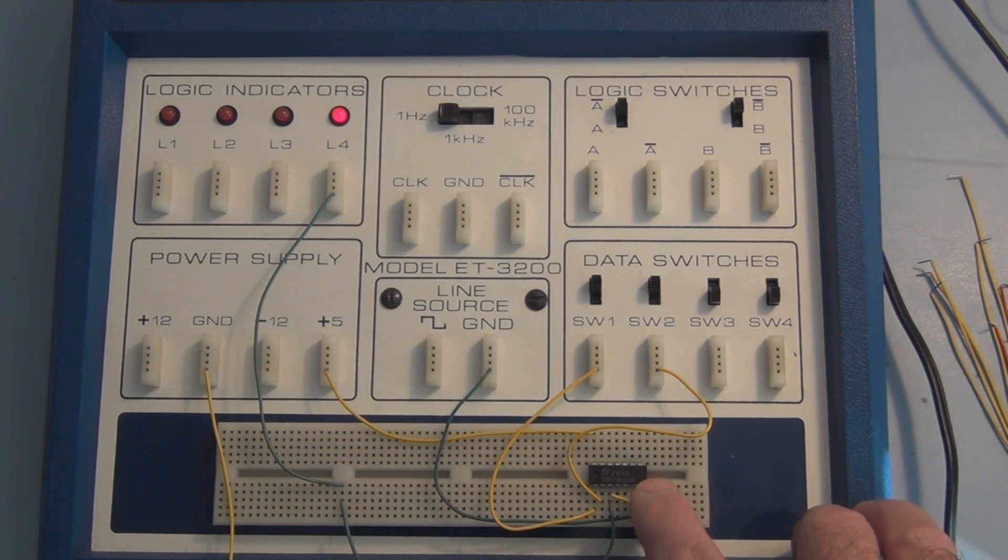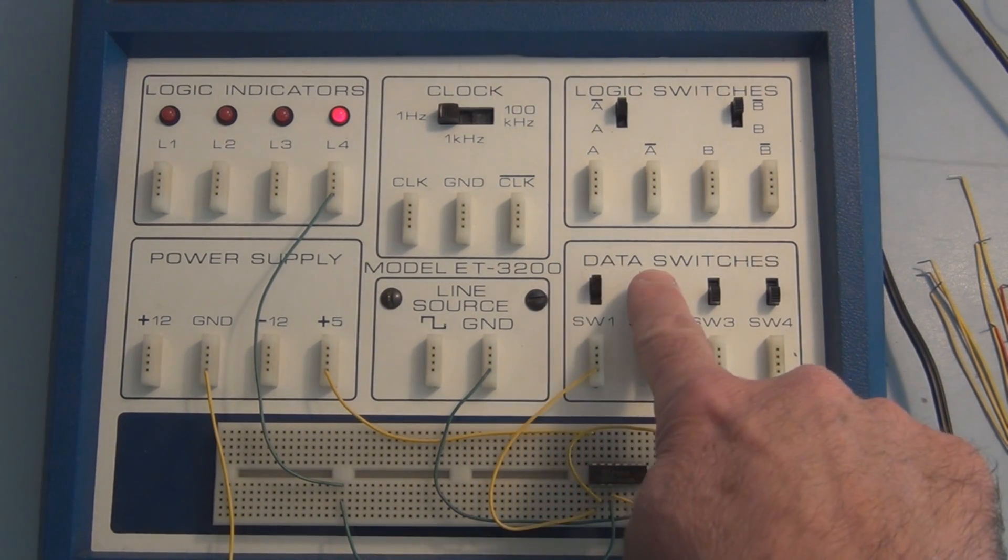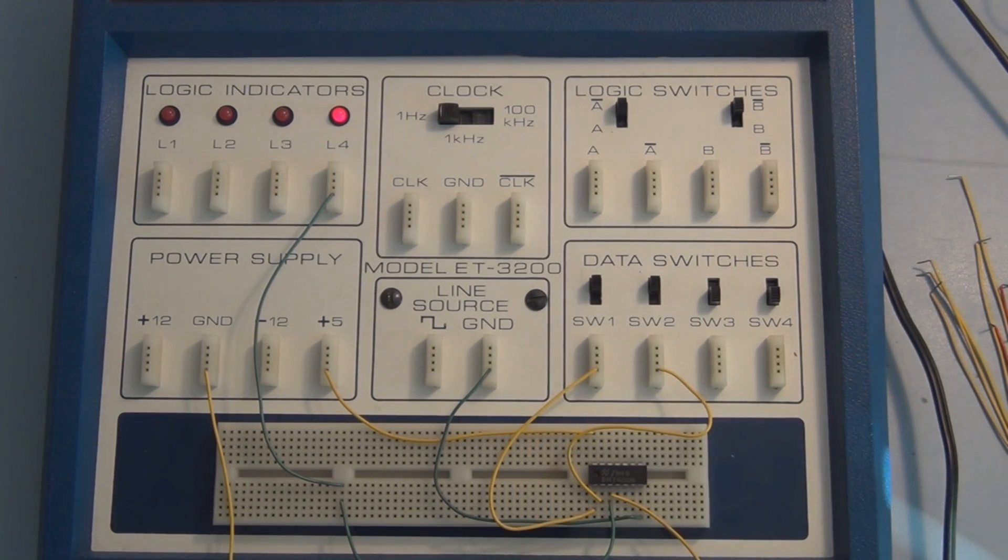So this is in fact functioning like an AND gate is supposed to function. Only when both inputs are high will you get a high on the output of an AND gate.